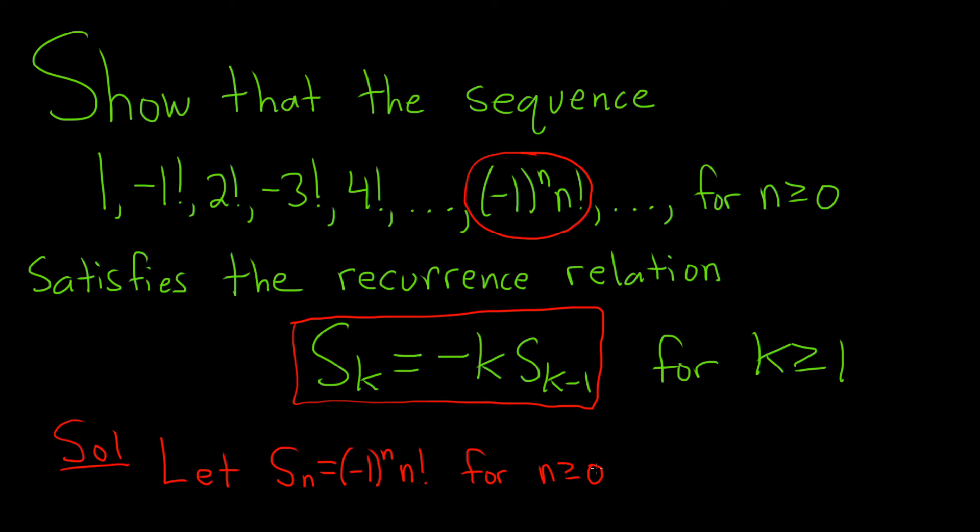Note this does check. Like if you plug in 0, you'll get S sub 0, which is negative 1 to the 0 times 0 factorial. And that's just 1 times 1, so it's 1. It does actually work for 1 and for the rest of them.